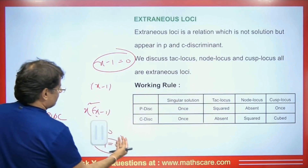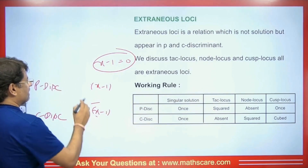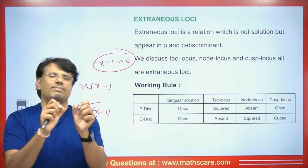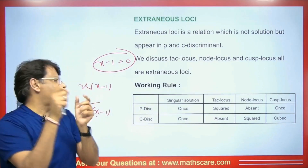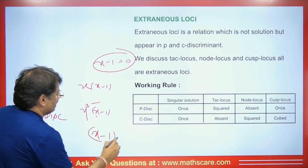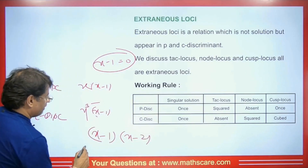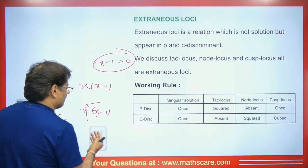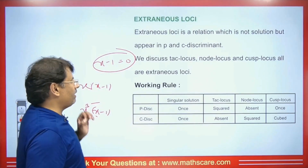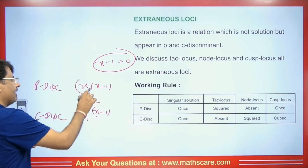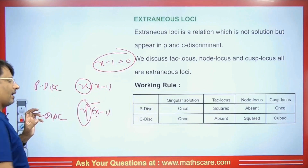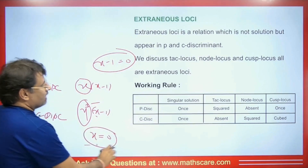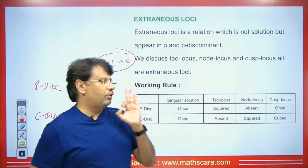Pay attention to this important concept. If x is given in the P discriminant and x³ in the C discriminant, it is not necessary that it should only be x — it could be something like (x−1)². For example, if P discriminant gives (x−1)(x−2) and C discriminant gives (x−1)³ · (x−2), the term with degree 1 in P and degree 3 in C — when set equal to 0 — gives the cusp locus.